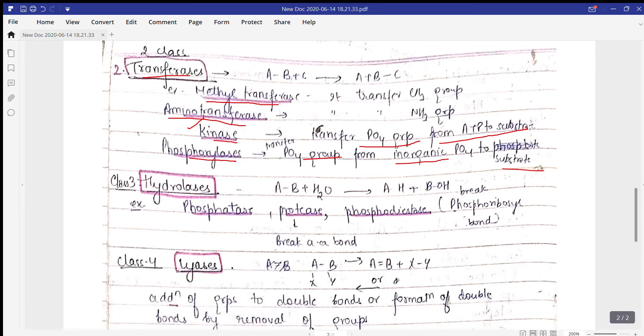Next is hydrolases. Hydro means water, so when something breaks down in the presence of water, we call them hydrolases. In this class, A plus B with water leads to breakdown of the substrate and forms products. Examples include phosphatases, proteases which break down amino acid bonds, and esterases.